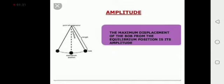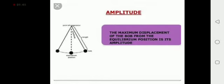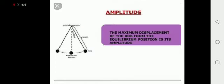Next is amplitude. The maximum displacement of the bob from the equilibrium position is its amplitude. The distance between position B and position A, that distance is called amplitude.